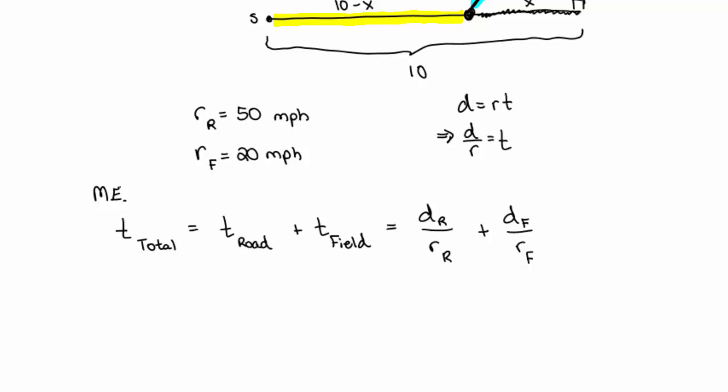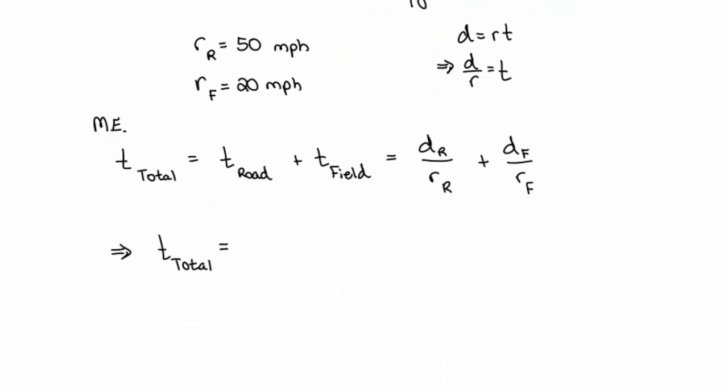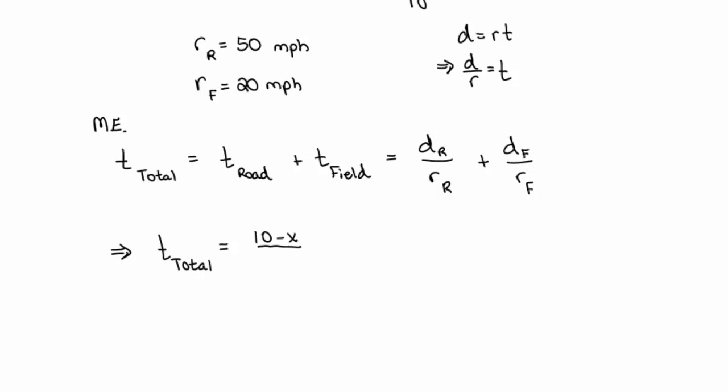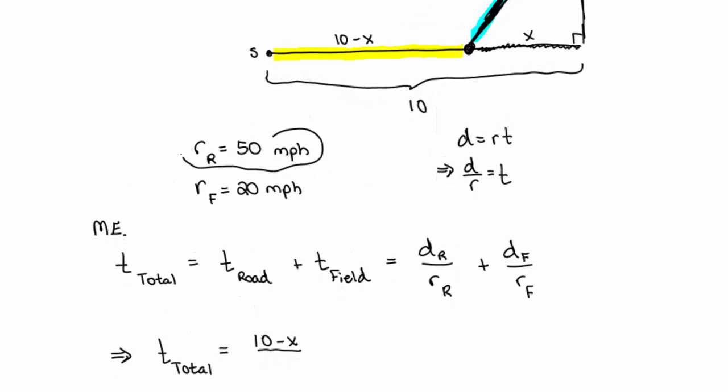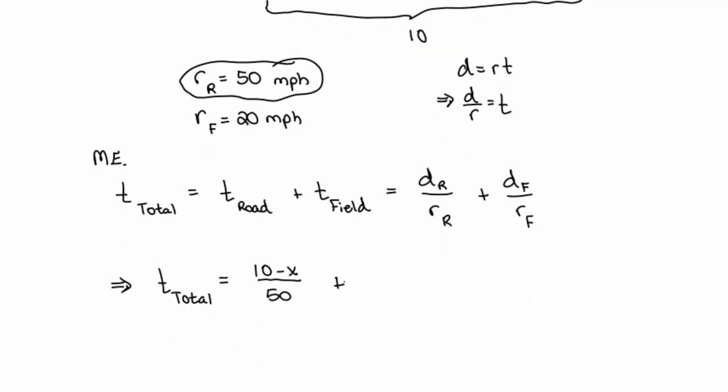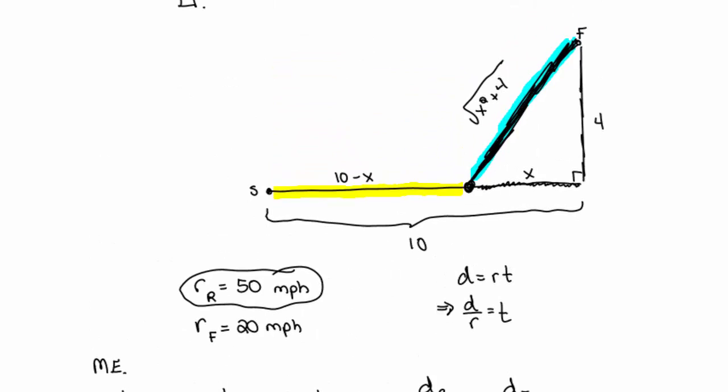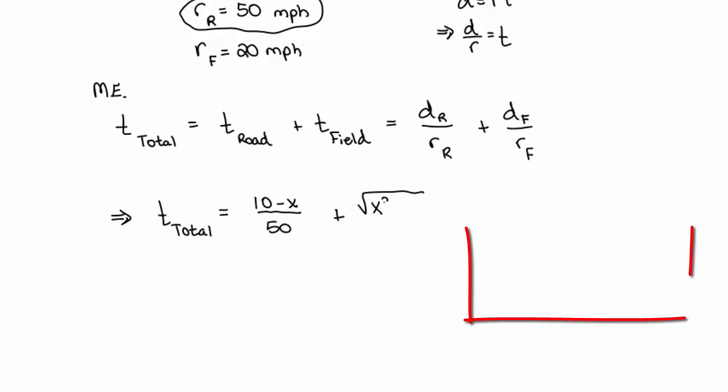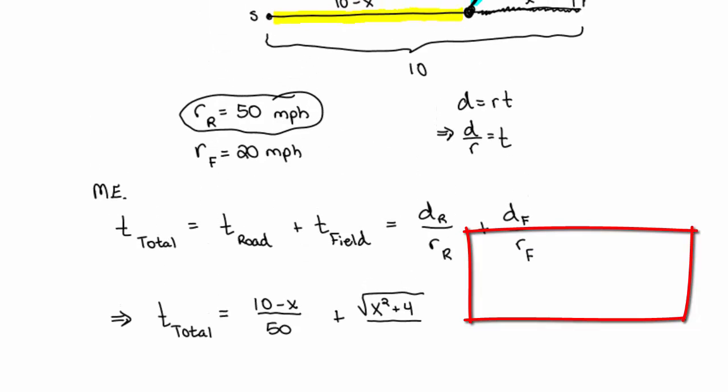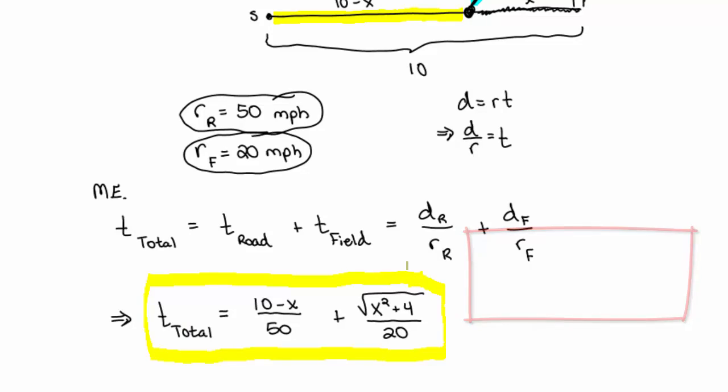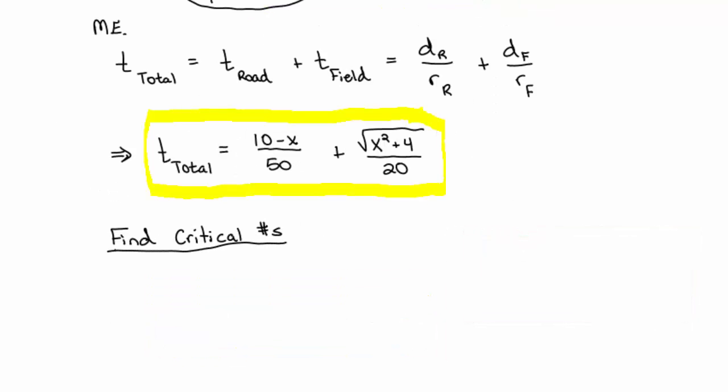This is my master equation. The total time equals the distance along the road, 10 minus x, divided by how quickly we drive along the road, 50, plus the distance along the field, square root of x squared plus 16, divided by how quickly somebody can drive in my field, 20 miles per hour. This equation only has two variables, so I can optimize it.